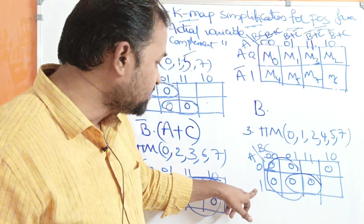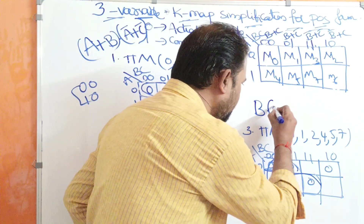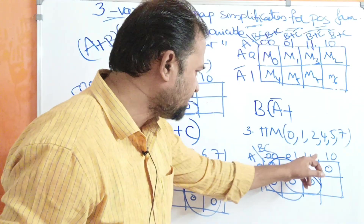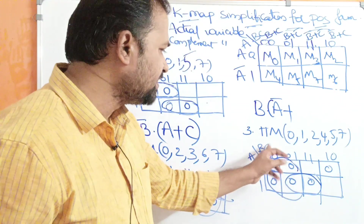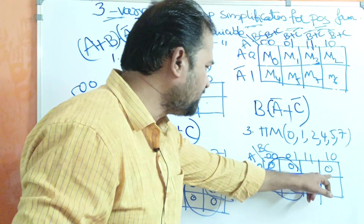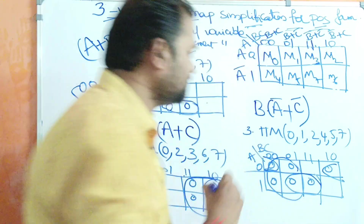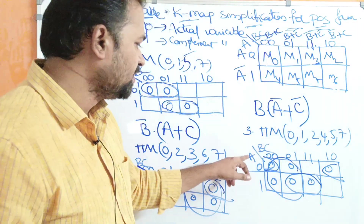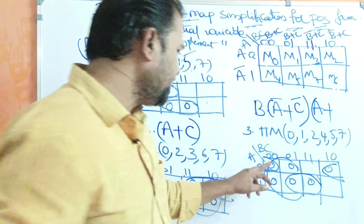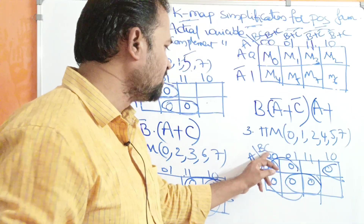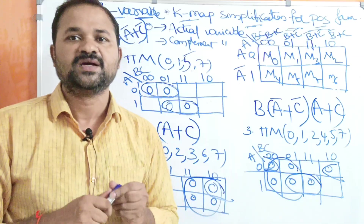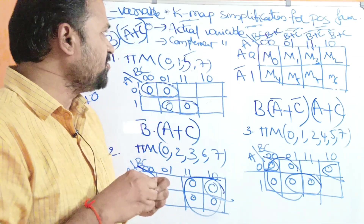For this two-cell group, A is 1 (complement), giving A bar. The second variable C is common and one means complement, giving C bar, so this group yields (A bar + C bar). To cover the last zero, we make two more cells a group where A is 0 (actual variable), giving A. The second variable C is zero (actual), giving C. So that group yields (A + C). The final simplified expression is B · (A bar + C bar) · (A + C).